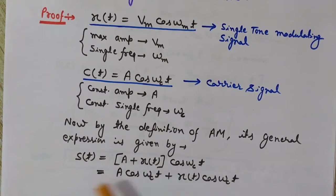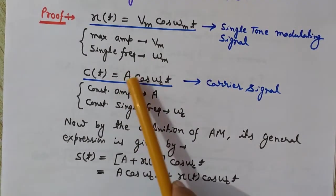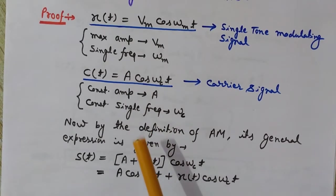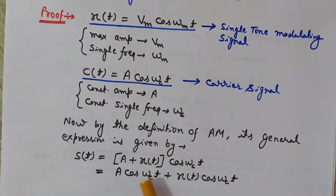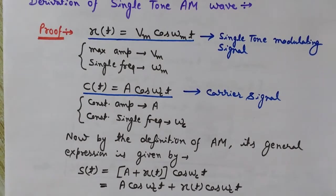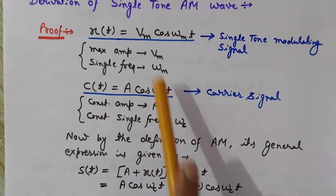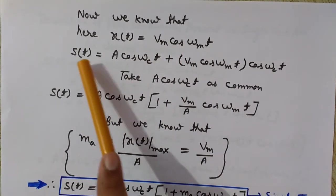In amplitude modulation the amplitude of the carrier wave, which is A, is modulated by the instantaneous value of the modulating signal. So in place of A we write A + x(t). Opening the brackets, it becomes A·cos(ωc·t) + x(t)·cos(ωc·t). Now substituting x(t) = Vm·cos(ωm·t), we replace x(t) with Vm·cos(ωm·t).